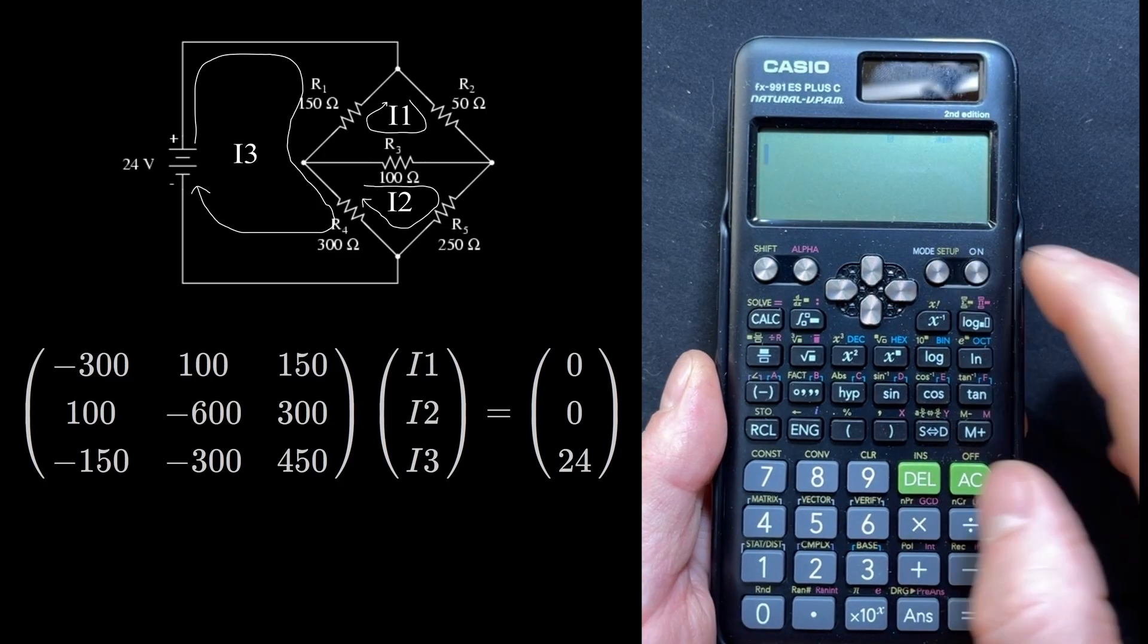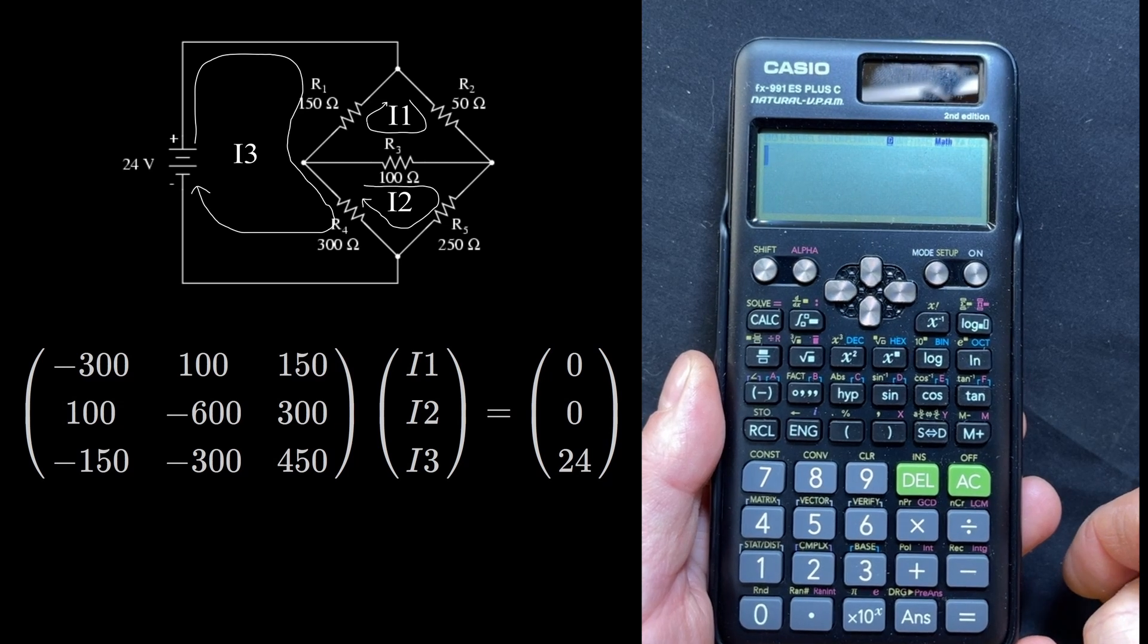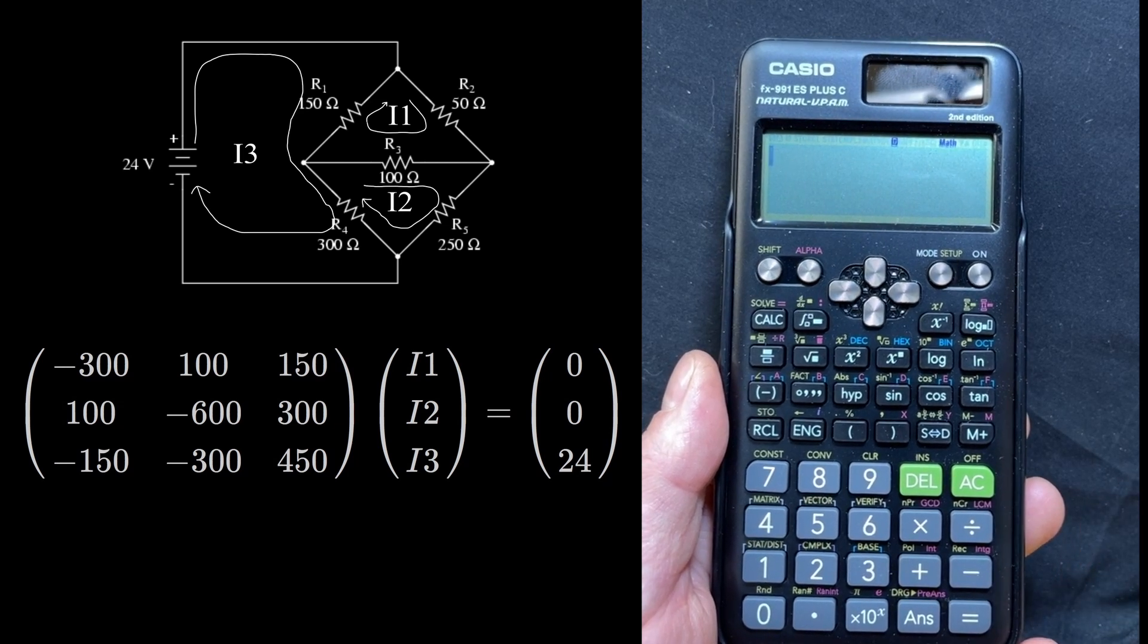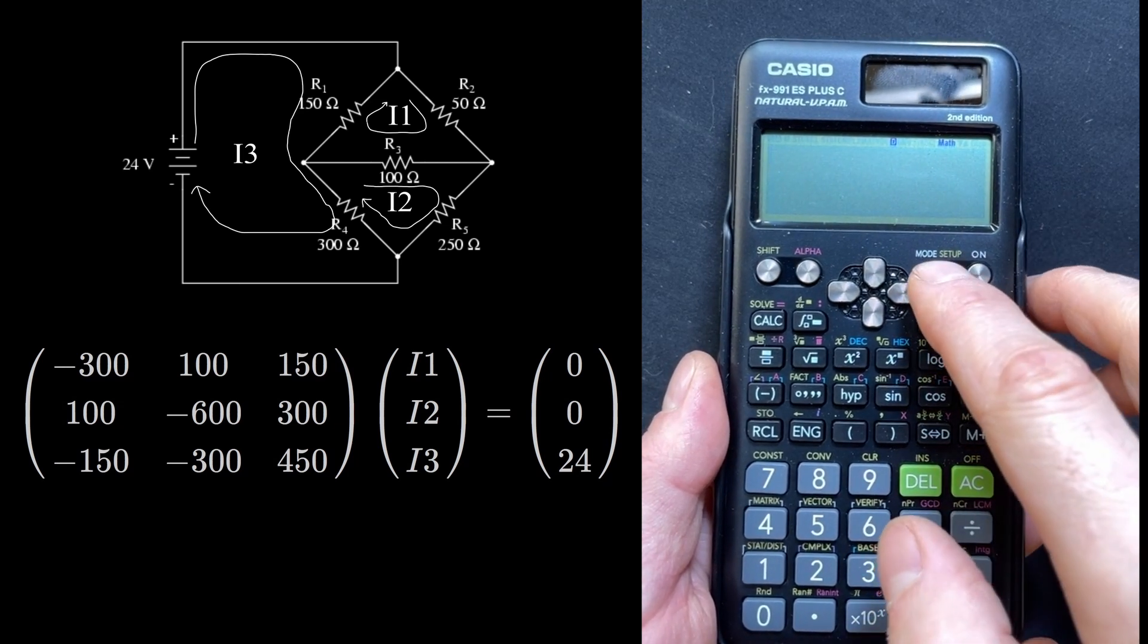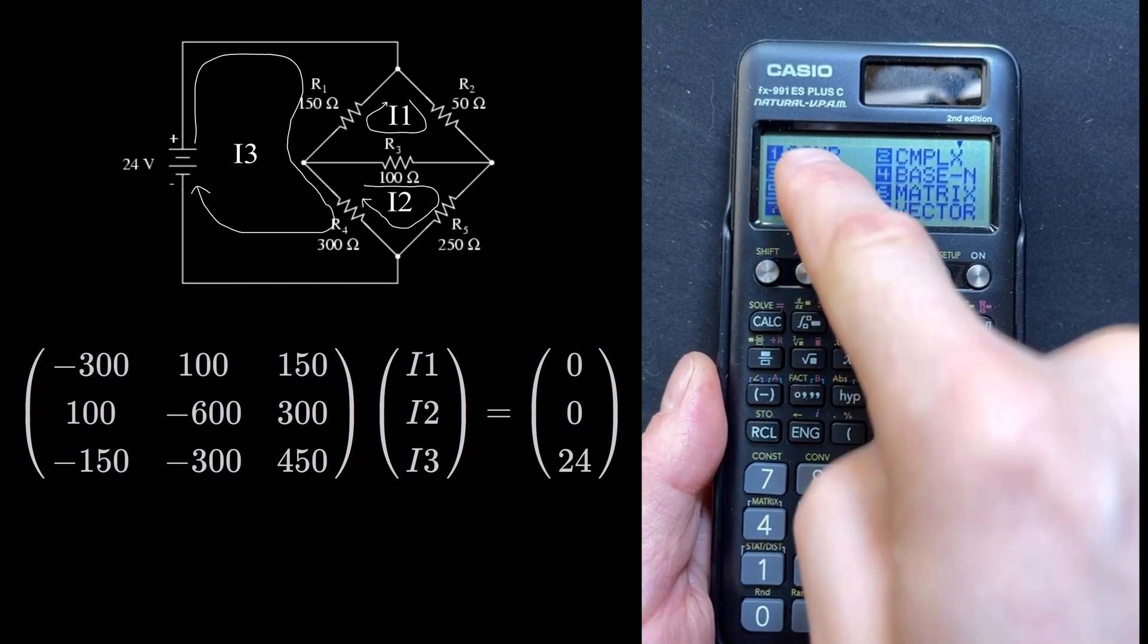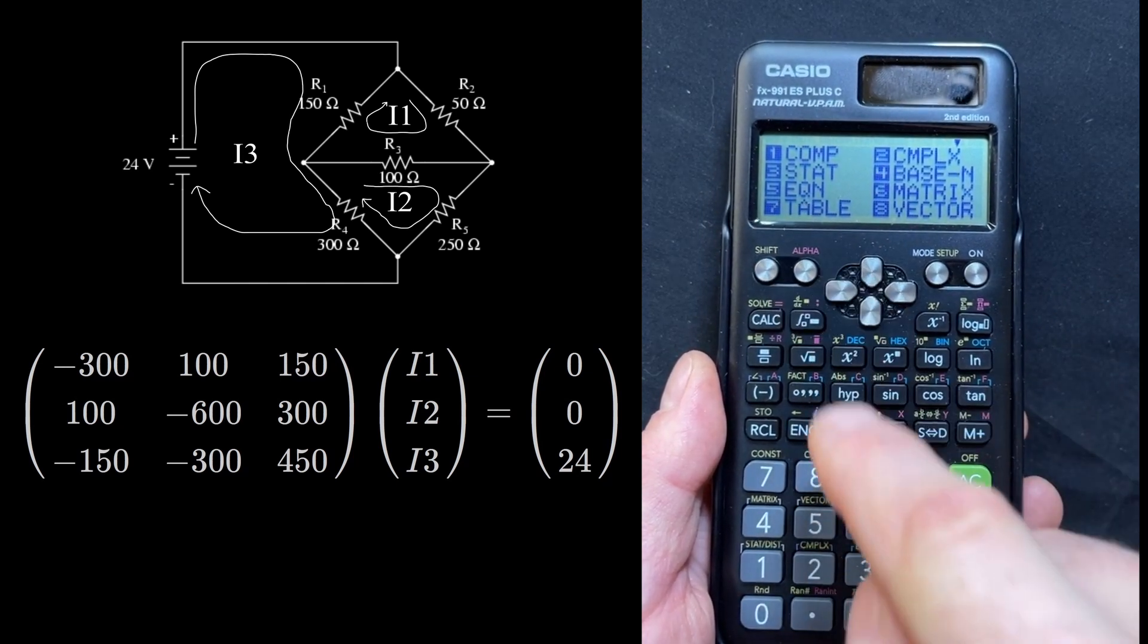Starting with the calculator turned off, let's turn it on. We are just in the regular math mode. We want to go into the equation mode. So to do that, we hit the mode button, and then we see the list here, and 5 is the equation mode.